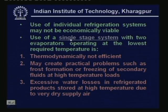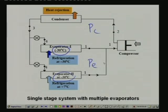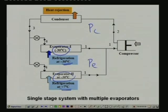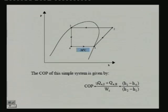In a simple single-stage system with two evaporators, both evaporators operate at the same temperature since a single compressor is used with no pressure-reducing valve. Both operate at the evaporator pressure Pe corresponding to minus 30°C. The only two pressures are condenser pressure Pc and evaporator pressure Pe. The COP of this system is simply the refrigeration effect H1 minus H4 divided by the work of compression H2 minus H1.